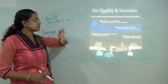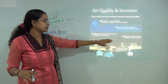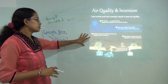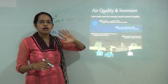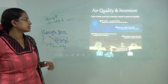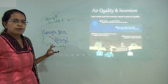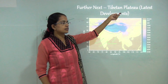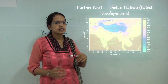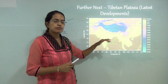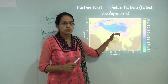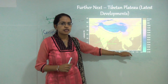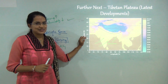Temperature inversion also decreases the level of warmth in the lower layers since those layers become cooler than the normal temperature pattern. This was an overview of temperature inversion. In the next class we will be focusing on the Tibetan Plateau and the latest developments there. Subscribe to our channel for more updates on climatology — we will be happy to answer any doubts. Have a good day ahead.